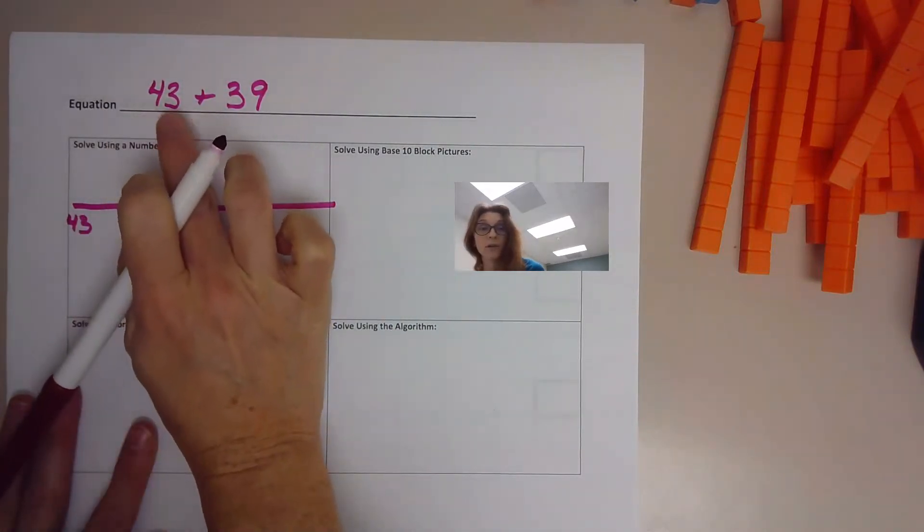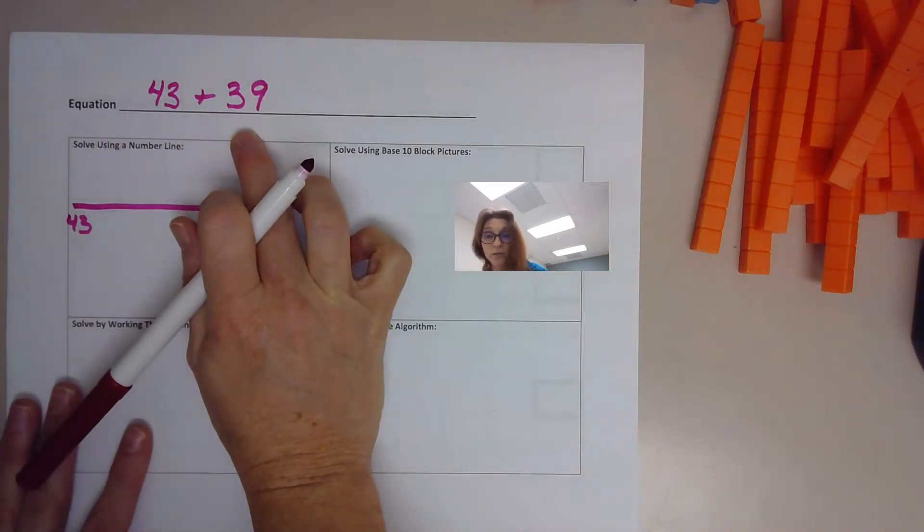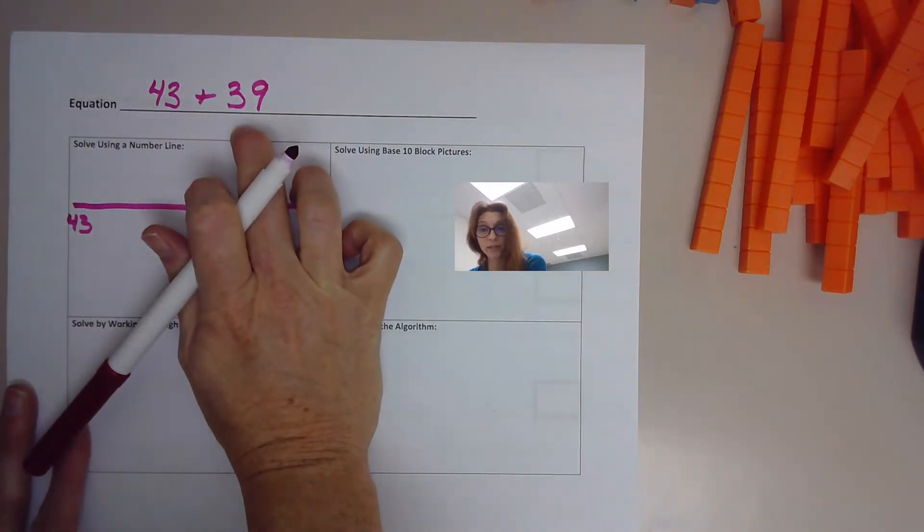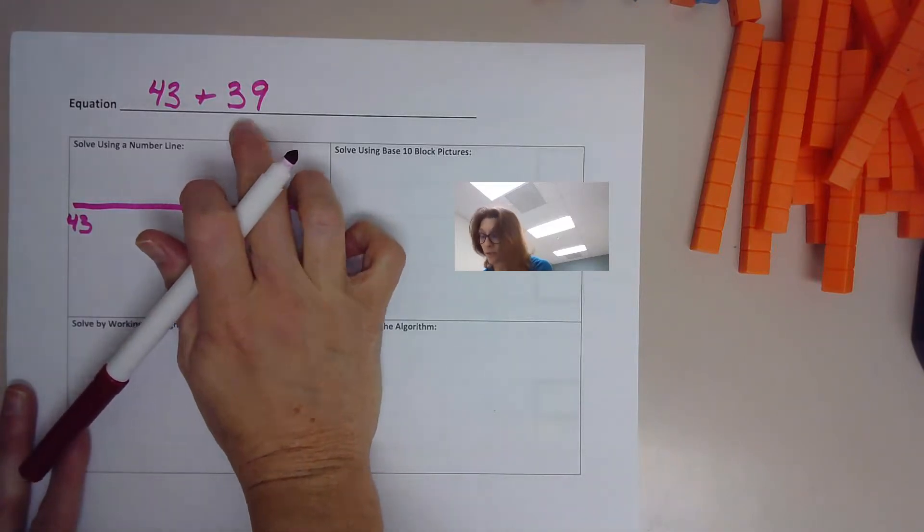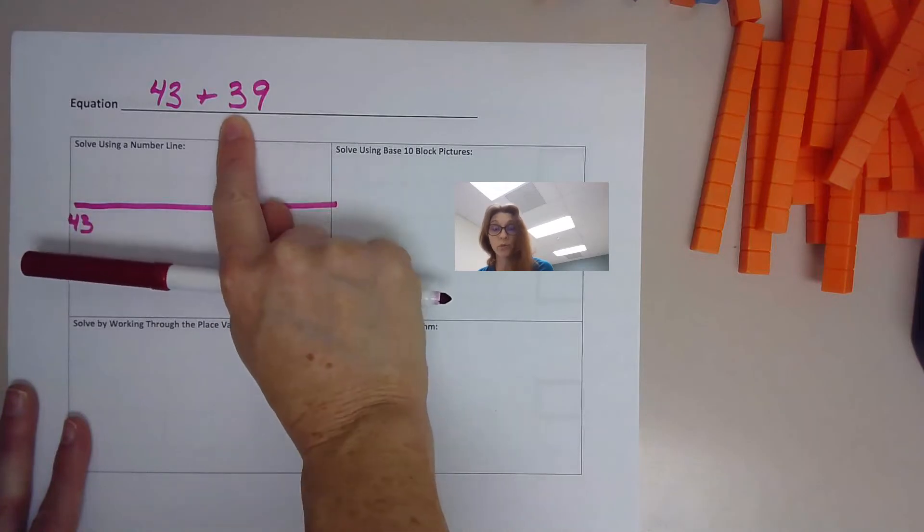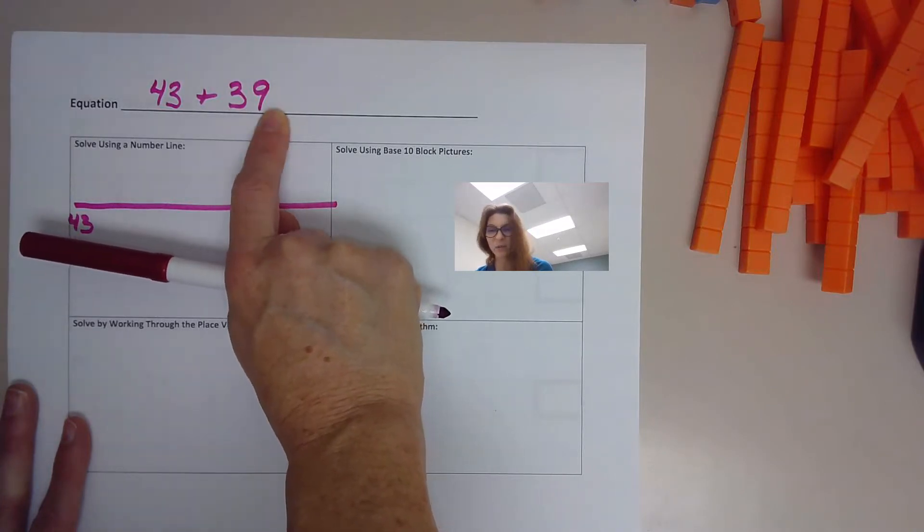There's our number that we're going to start with, and we're going to add 39 to it. Now we can do this by, like we did on our first page with our number line, showing with jumps through the place values. So here we're going to do three jumps of 10. Always start with your largest place value. Do your big numbers first.